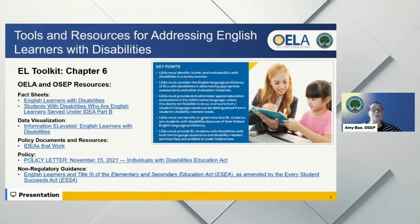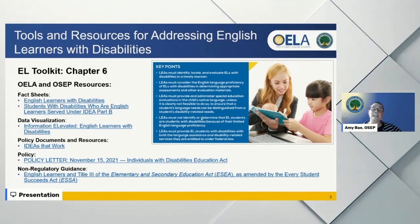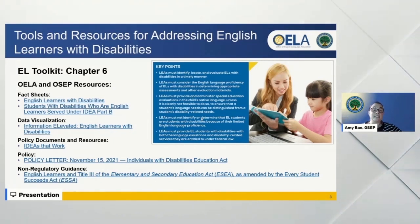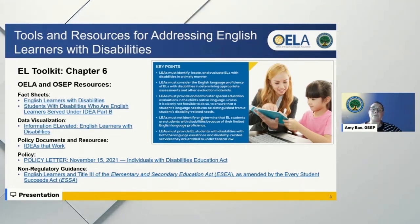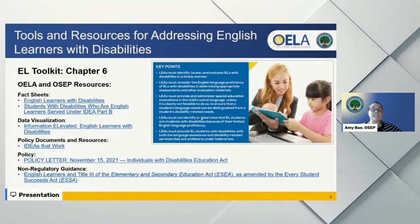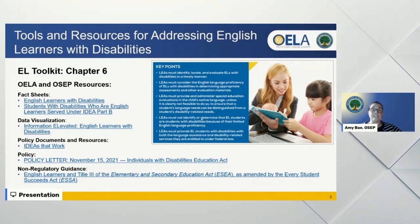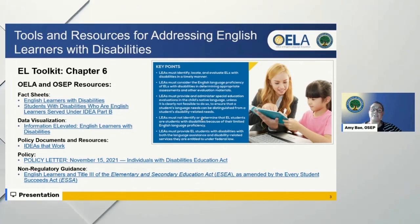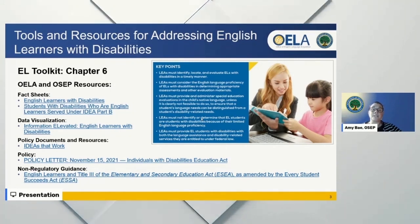OSEP Fast Fact is an ongoing effort to display data from the 12 data collections authorized under IDEA Section 618 into graphic visual representations, with the intent to present our 618 data quickly and clearly. Visit the OSEP Fast Facts page for existing and future fast facts information.